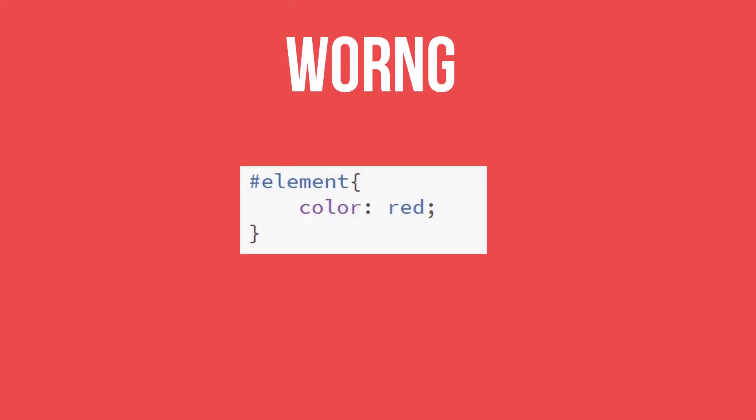As I mentioned, we need to understand CSS color. Please note: the color name, the hex code, or the RGB color code are all different ways to specify color in CSS.